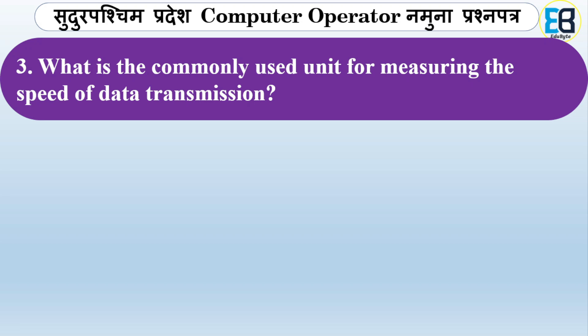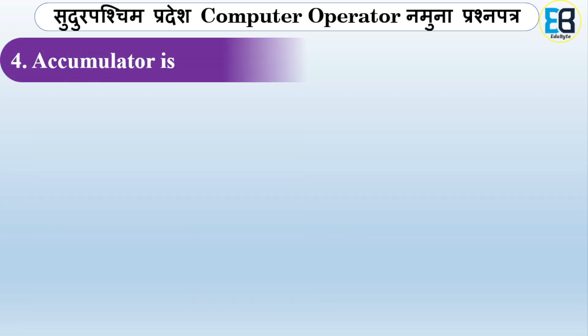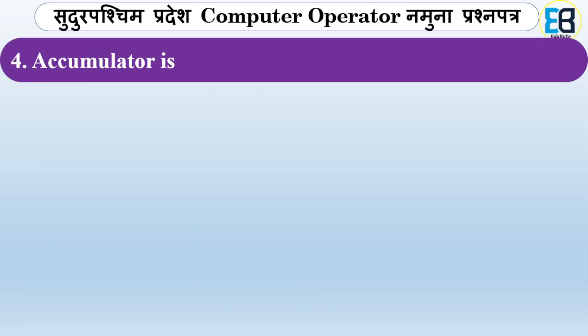What is the commonly used unit for measuring the speed of data transmission? Options are bytes per second or bits per second. The correct option is bits per second — that is the unit used to measure data transmission speed.